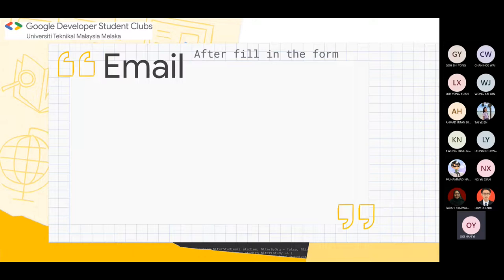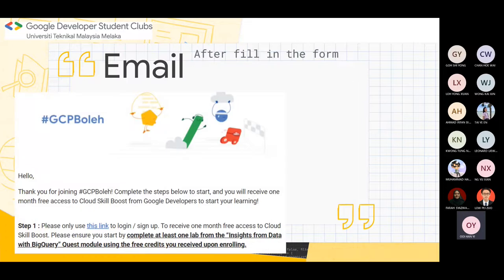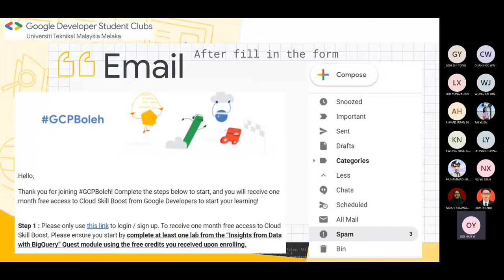After you fill in the registration form, you will receive an email within 24 hours. Please make sure you click on the link inside Step 1 of the email to log in or sign up. If you don't have an account, you can sign up for a new one. If you already have an account, just sign in. After that, you will get 9 credits for your account. In case you didn't receive any email, please check your spam box.